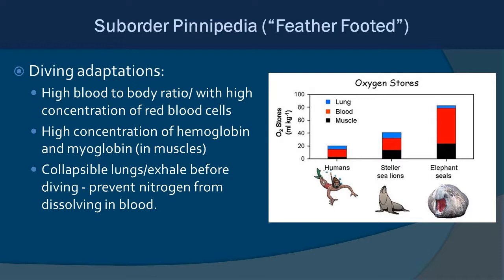A few notes on diving adaptations, relevant across many marine mammal groups: they have a high blood-to-body ratio with high concentrations of red blood cells, hemoglobin, and myoglobin — myoglobin being found in muscles. This high concentration allows them to store large amounts of oxygen for long dives. The graph on the right compares oxygen storage in blood, lungs, and muscles for a human, a Steller sea lion, and an elephant seal. Elephant seals have the most by far and are among the deepest divers, tracked to over 5,000 feet.